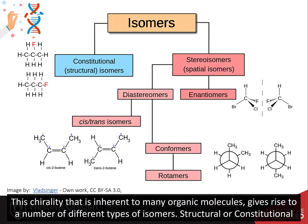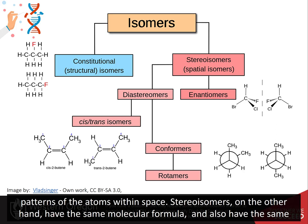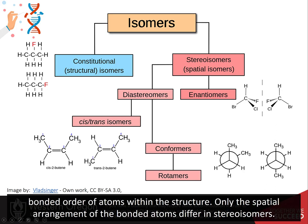This chirality, that is inherent to many organic molecules, gives rise to a number of different types of isomers. Structural or constitutional isomers, shown on the left in blue, are the simplest type of isomer. They have the same molecular formula but have different bonding patterns of the atoms within space. Stereoisomers, on the other hand, have the same molecular formula and also have the same bonded order of atoms within the structure. Only the spatial arrangement of the bonded atoms differ in stereoisomers.